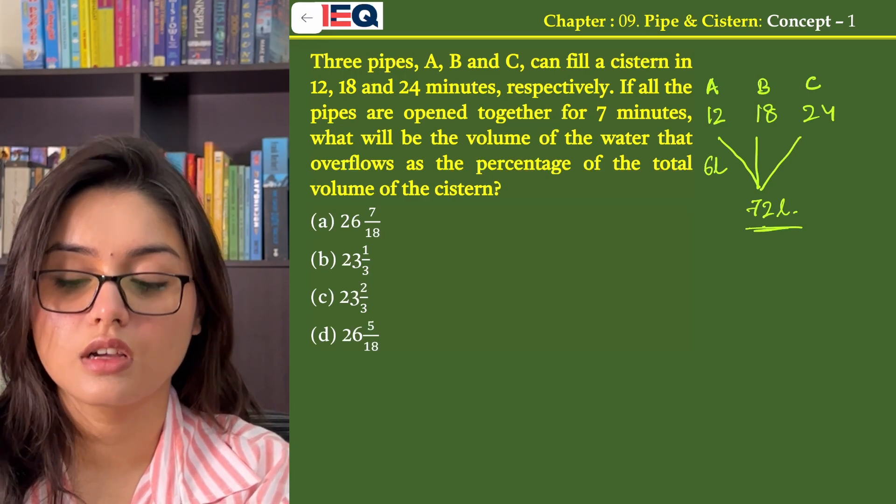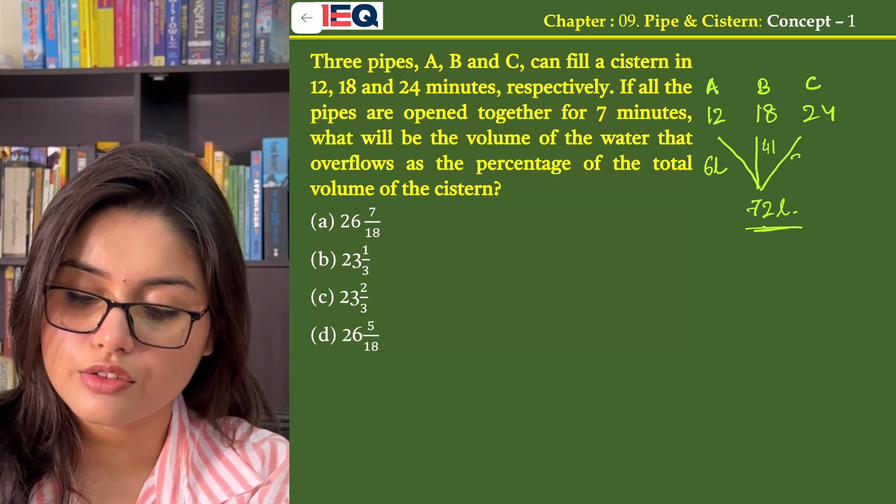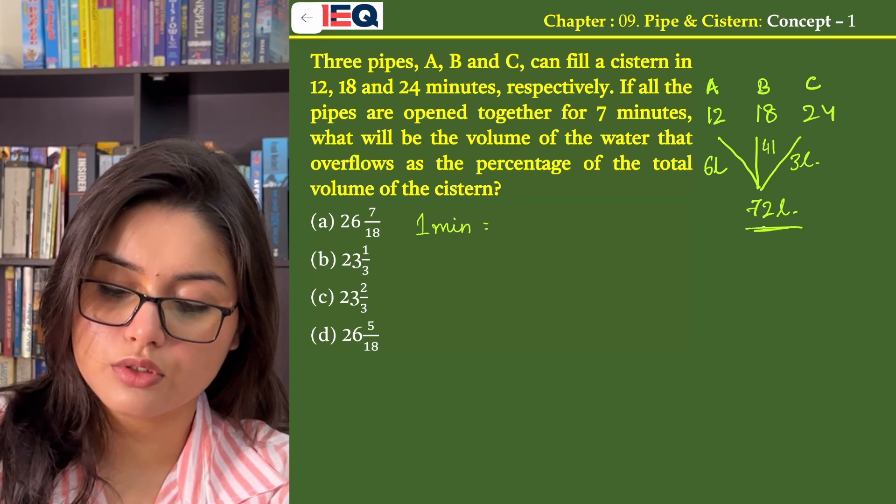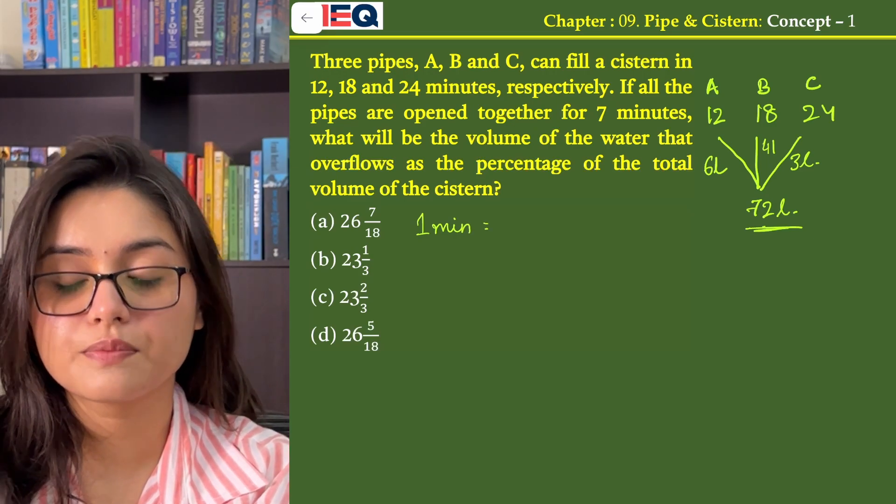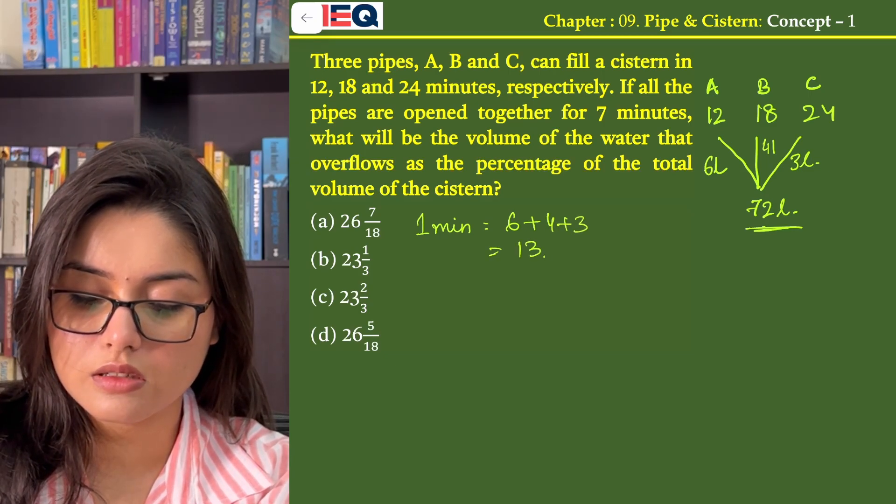Similarly B will fill 4 litres in 1 minute and C will fill 3 litres in 1 minute. So in 1 minute, if all the 3 pipes are opened together, how much will they fill? That is 6 plus 4 plus 3 which is equal to 13 litres.